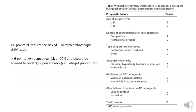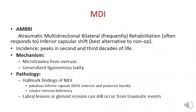Multi-directional instability (MDI) results from microtrauma due to overuse or generalized ligamentous hyperlaxity. The hallmark finding is a patulous inferior capsule with rotator interval deficiency. However, labral lesions or glenoid erosion can still occur from traumatic events.